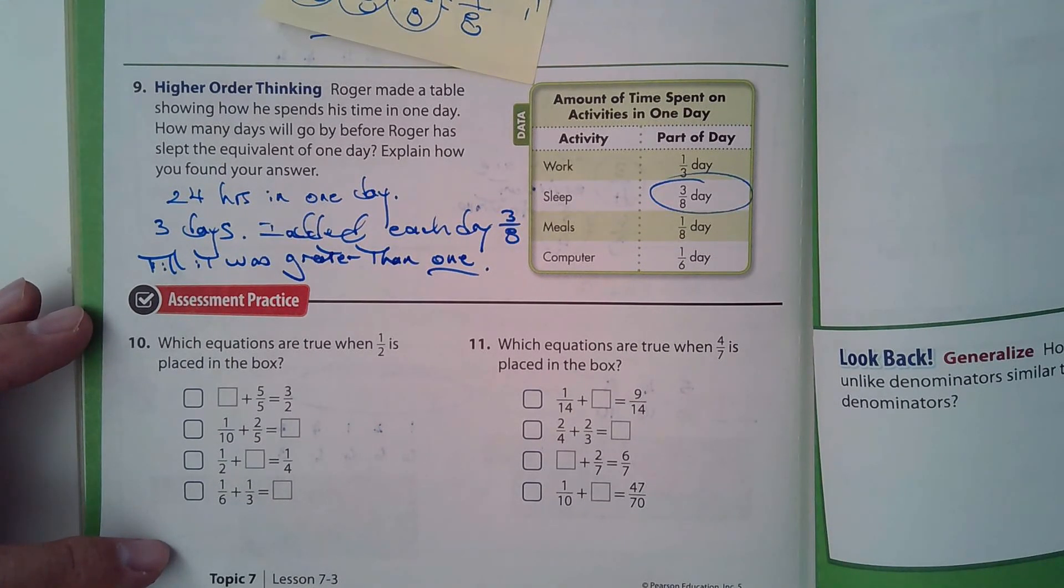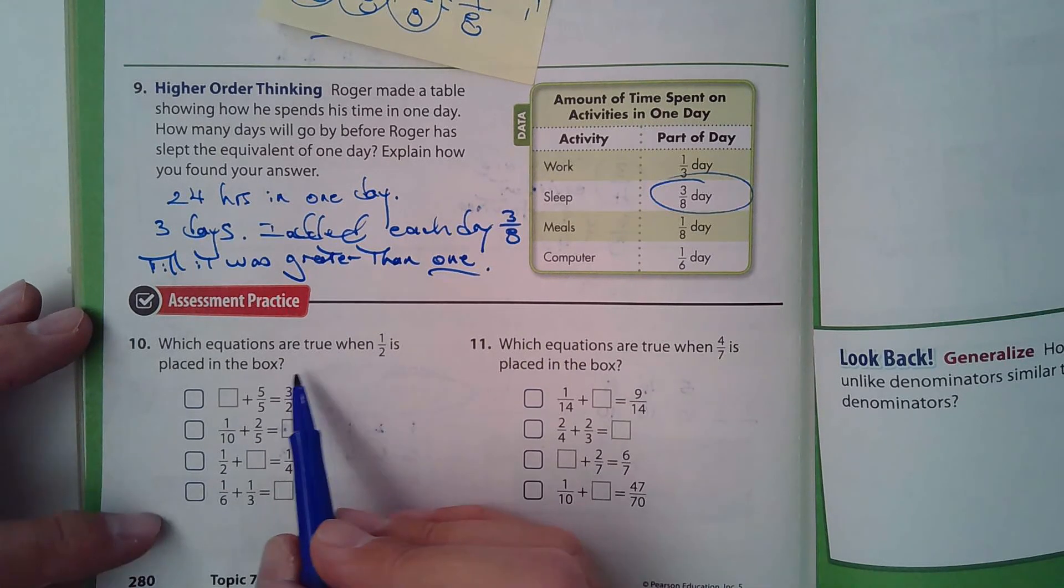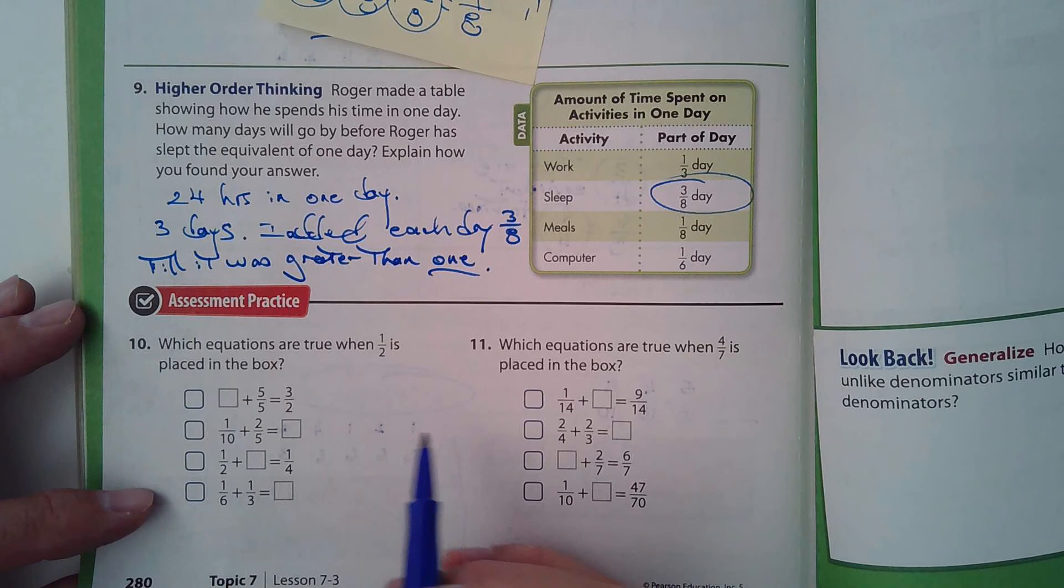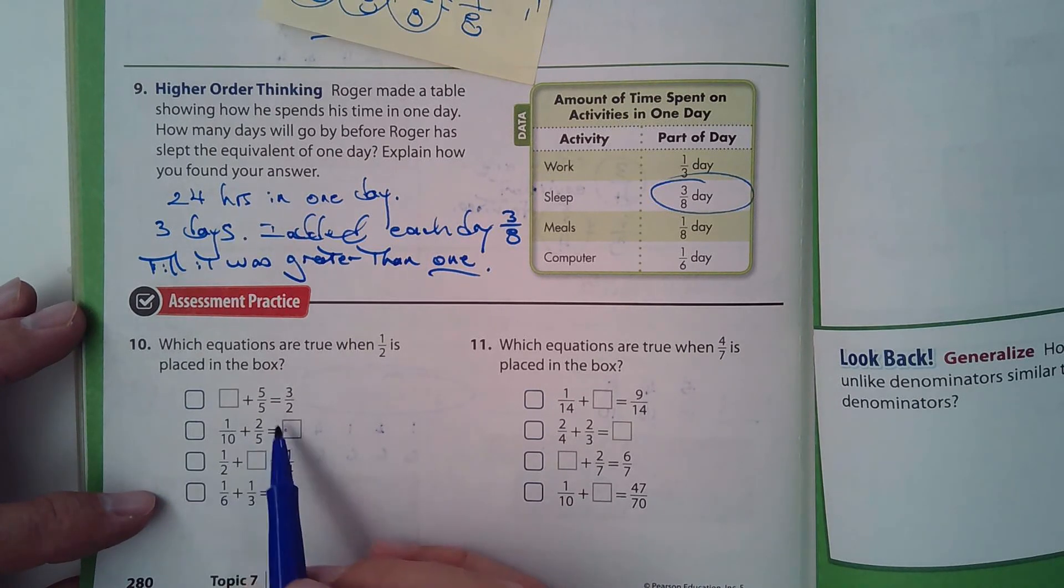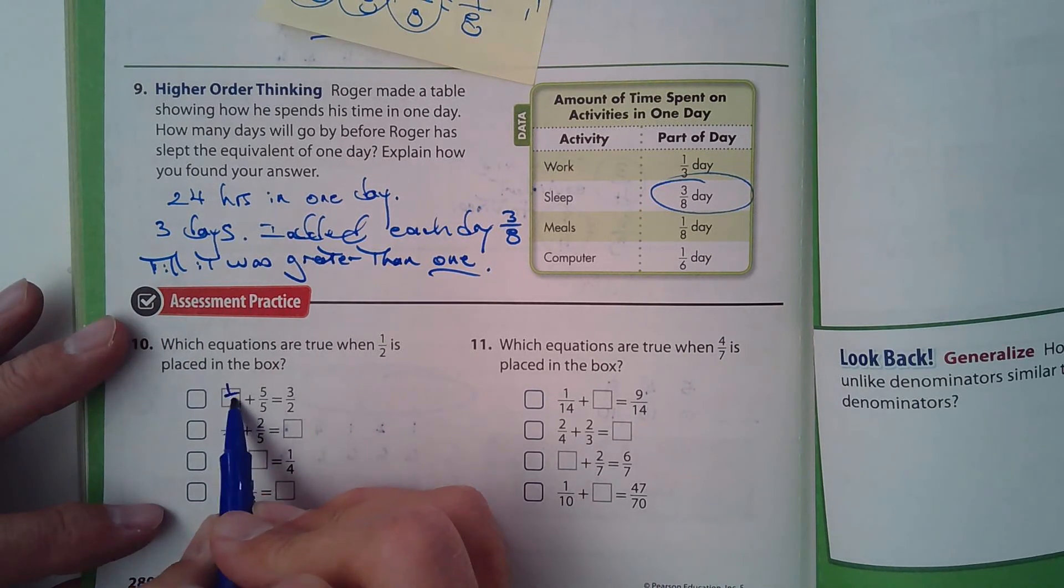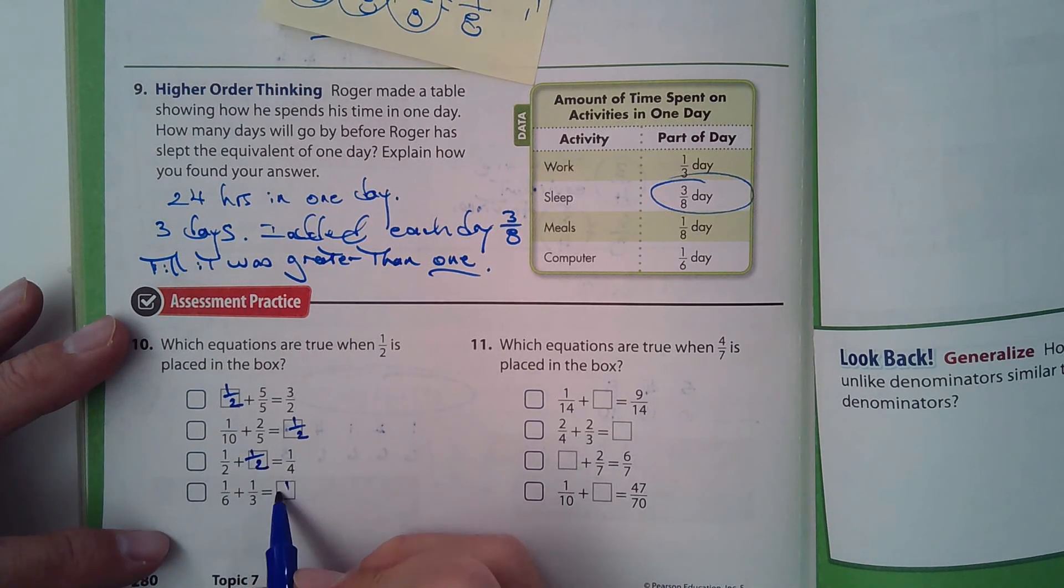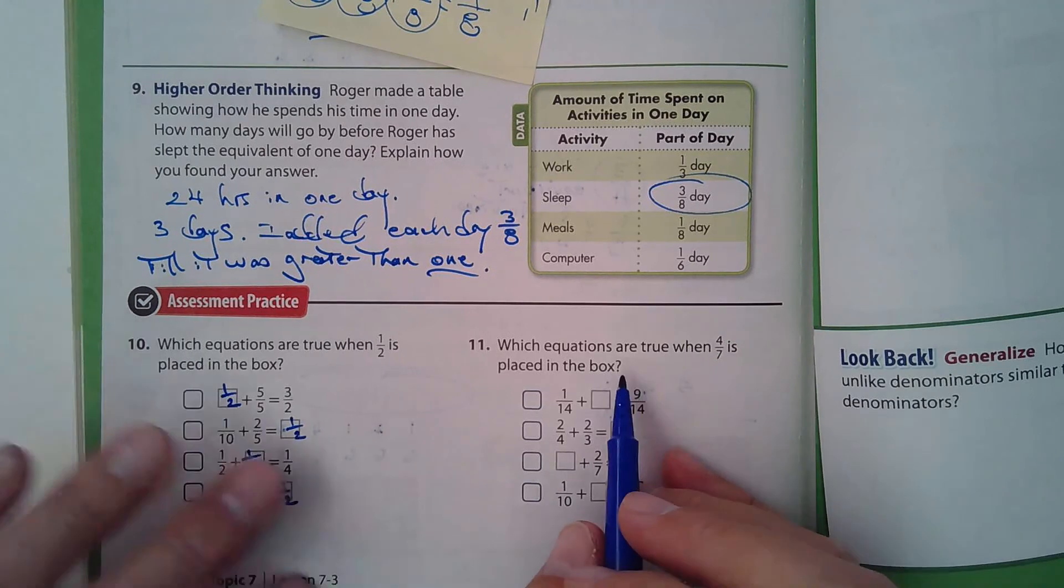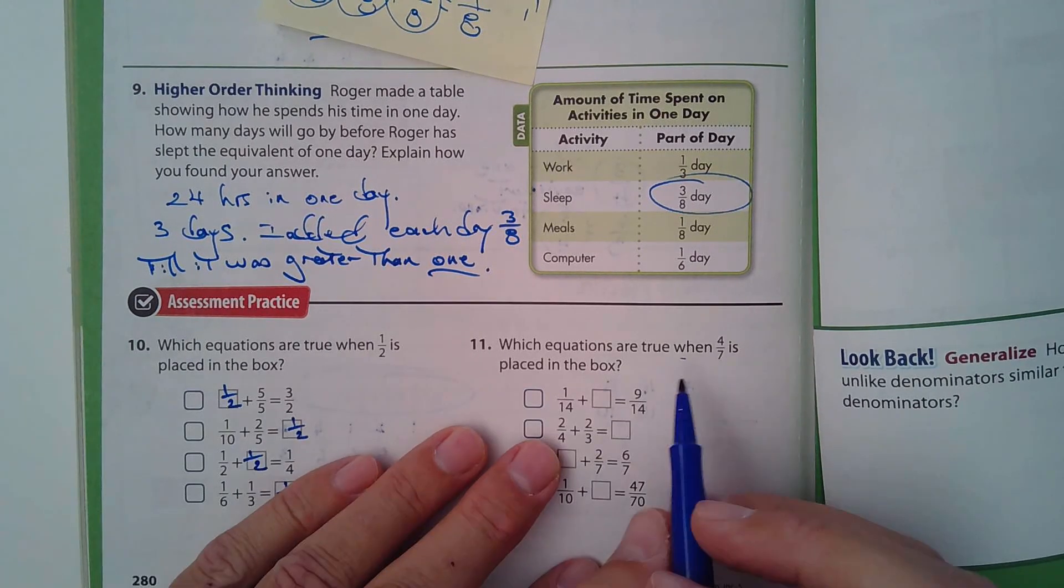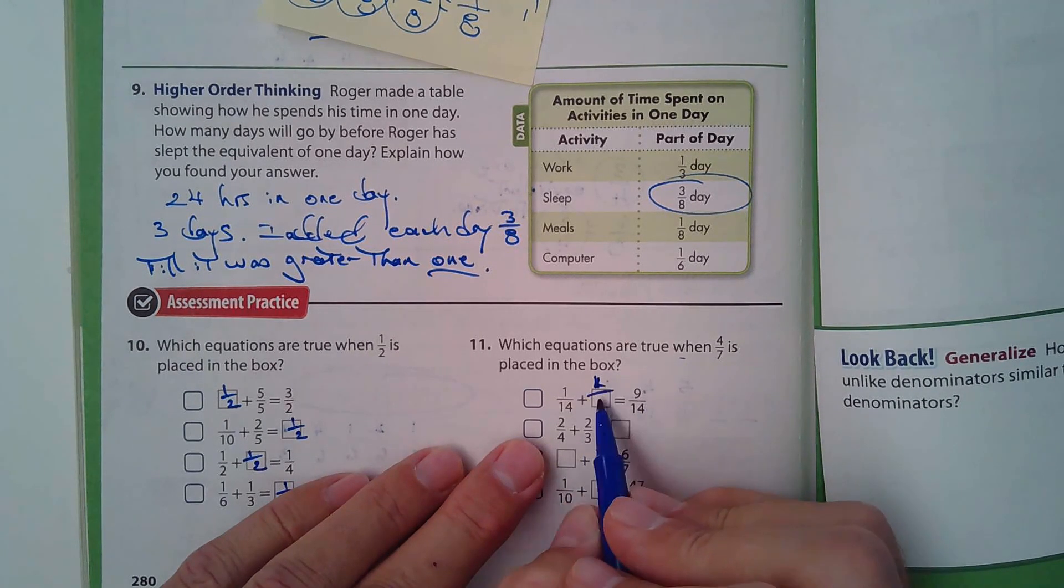Problems 10 and 11: I think you guys can do that. Which equations are true when 1/2 is placed in the box? So each one of these boxes would have a half, and you need to mark off which ones would be true. Which equations are true when 4/7 is placed in the box? So each box would have 4/7. I think you guys could do that.